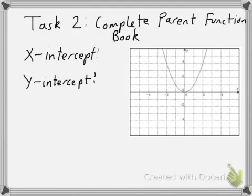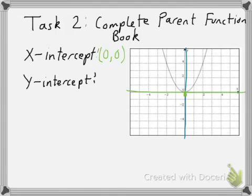For each function you'll need to describe the x-intercept and the y-intercept. These are terms that you should have heard before in Algebra 1. The x-intercept is where it crosses the x-axis, and the y-intercept is where it crosses the y-axis. In the case of the quadratic parent function, the x-intercept is right there at (0,0). The function barely touches down, hits (0,0), and returns back up. The y-intercept is also located at (0,0) because this is where it crosses the y-axis.